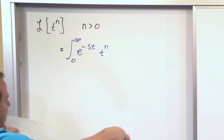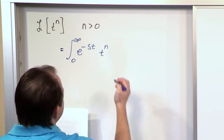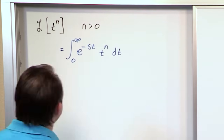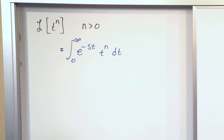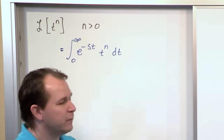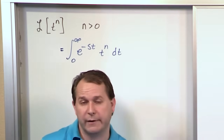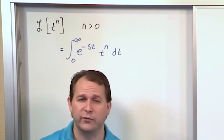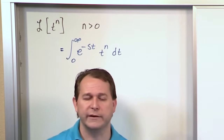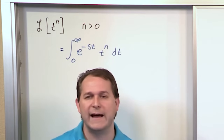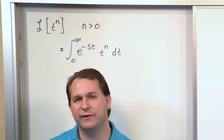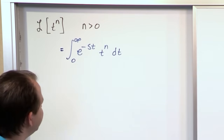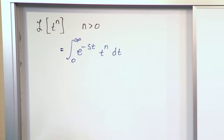It could be t to the fifth, t to the sixth, whatever. And we're integrating over time. So if you know how to look at this and write the answer down — which most people aren't going to — then that's the Laplace Transform and you're golden. For most of us we have to work through that. It's given to you in a table of Laplace Transforms, but I want to go through how to integrate this to show you where it really comes from.